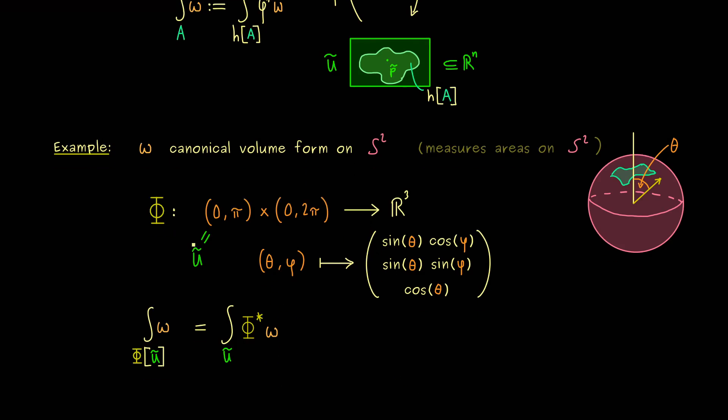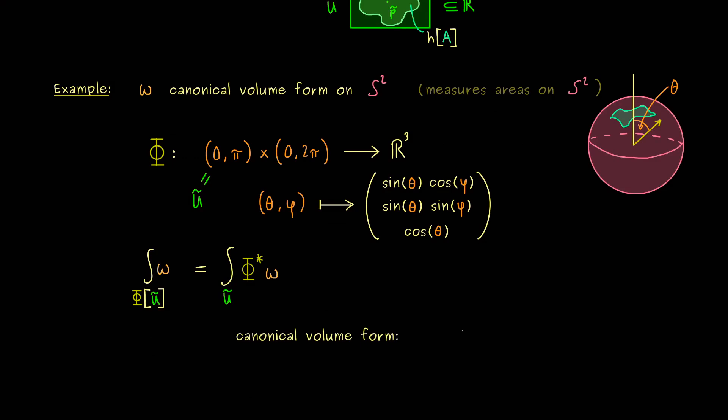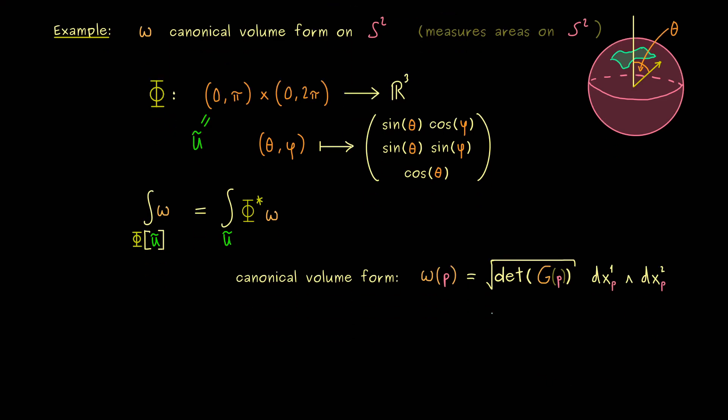We only need to know what phi star omega is, and this is not so complicated at all. We just have to know the definition of the canonical volume form, or more concretely, we need the representation in local charts. There we just need the determinant of Gram. Please don't forget, this one depends on the chosen point p. Then we get the standard dual basis with respect to the chart, usually called dx1, dx2, and so on. In two dimensions we only have two. This one is already calculated in Part 36. You should know that the square root here is always sine of theta. More precisely, sine of theta for the point p given as this vector. This implies that the z-component of p already determines this Gram determinant.